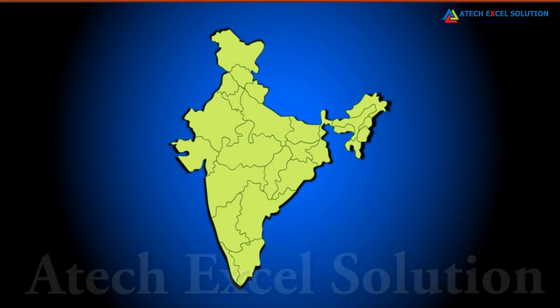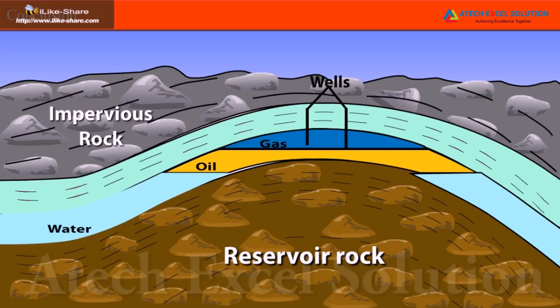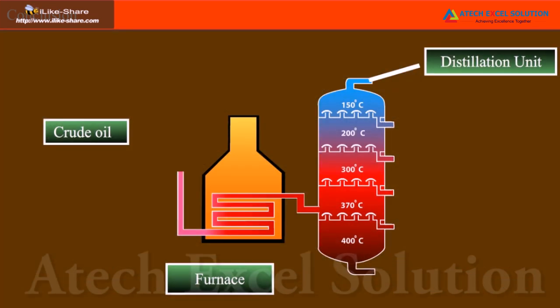In our country, natural gas is found in Tripura, Rajasthan, Maharashtra and in the Krishna Godavari Delta. At the end of the lesson, we learnt about the formation of Petroleum and Natural Gas, the constituents of Petroleum and their various uses, and the advantages and uses of Natural Gas.